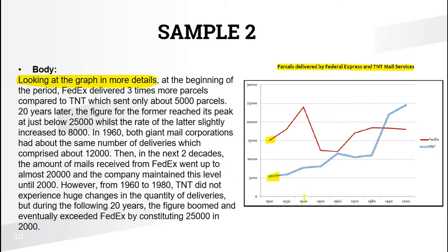Twenty years later, the figure for the former — FedEx — reached its peak at just below 25,000. The vocabulary 'former' and 'latter' refers to the first and second items mentioned in the previous sentence respectively, so former means FedEx and latter means TNT. Whilst the rate of the latter slightly increased to 8,000.